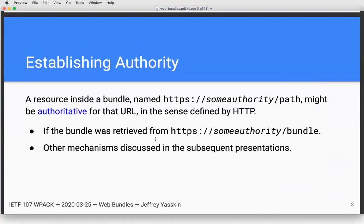A resource inside a bundle is addressed by a full URL, so there's some authority inside that URL. The resource might be authoritative for the URL — HTTP defines this notion of an authoritative response — and there are several conditions that might cause the resource to be authoritative. The one that seems pretty safe is if the bundle was retrieved from the same HTTPS origin. If you're familiar with service workers, there's a path restriction there, and we should have the same path restriction here.